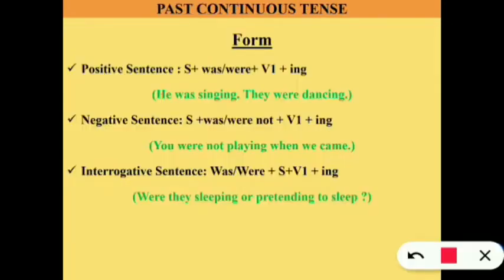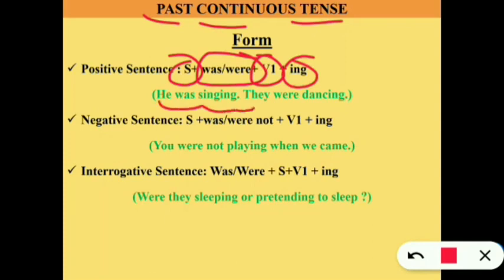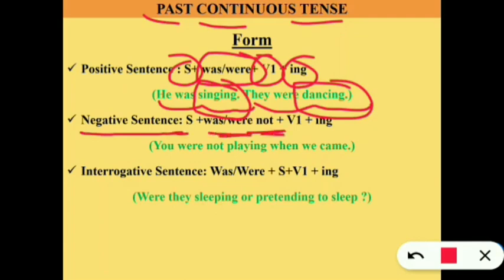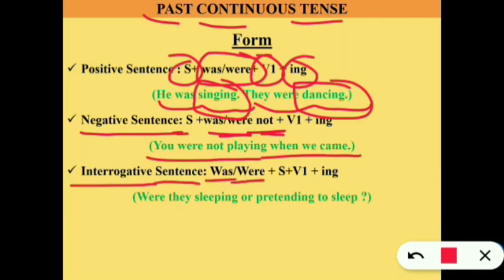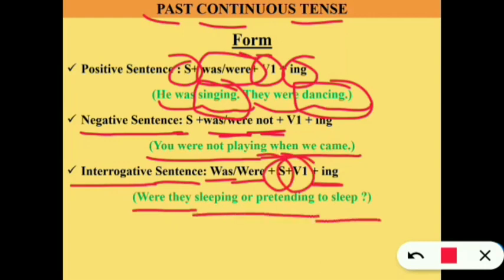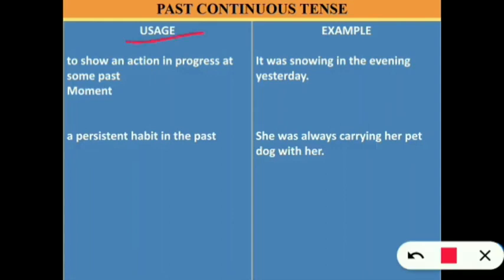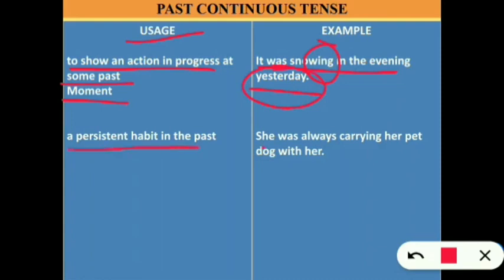Past continuous tense: in a positive sentence, subject + was/were + verb 1 with -ing. Example: 'He was singing,' 'They were dancing.' In a negative sentence: subject + was/were + not + verb 1 with -ing — 'You were not playing when we came.' In an interrogative sentence: was/were + subject + verb 1 with -ing — 'Were they sleeping or pretending to sleep?' Uses: to show an action in progress at some past moment ('it was snowing in the evening yesterday'), or a persistent habit in the past ('she was always carrying her pet dog with her').